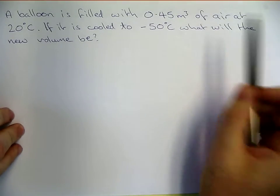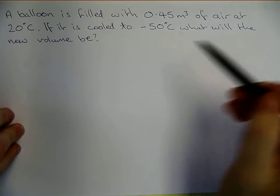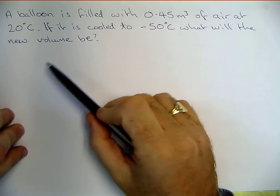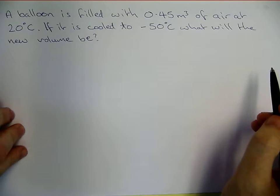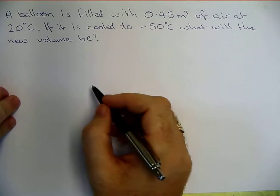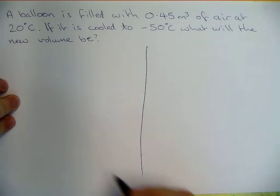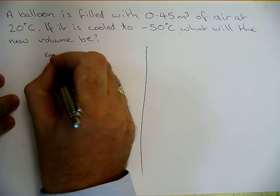A balloon is filled with 0.45 cubic metres of air at 20 degrees Celsius. If it is cooled to minus 50 degrees Celsius, what will the new volume be? So let's put a line down the middle and start writing down what we know.